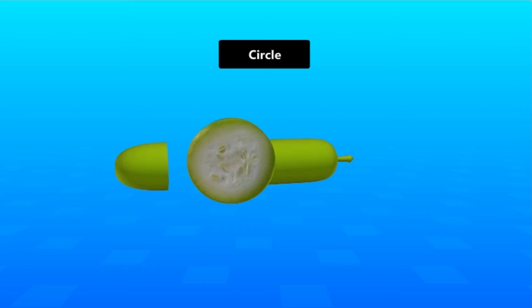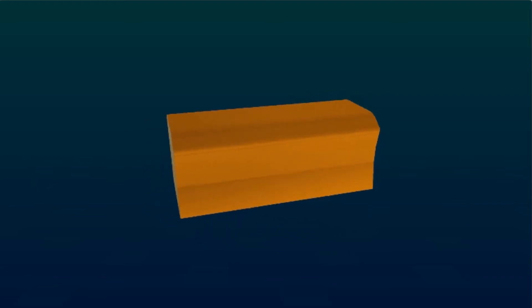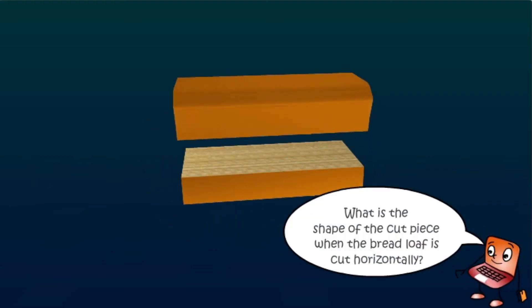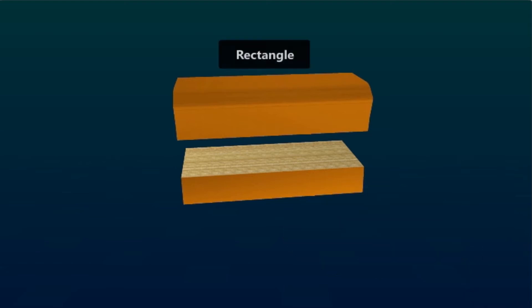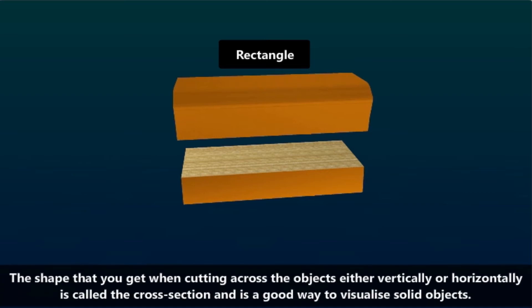To check this, let us cut the bread loaf horizontally. What is the shape of the cut piece? When the bread loaf is cut horizontally, it is a rectangle. The shape that you get when cutting across objects either vertically or horizontally is called the cross section.